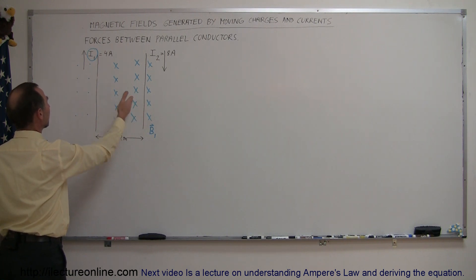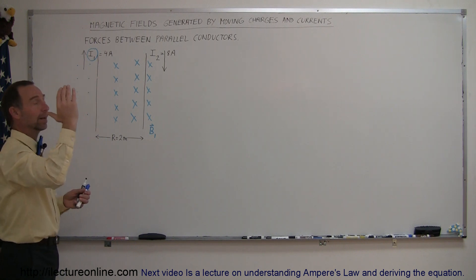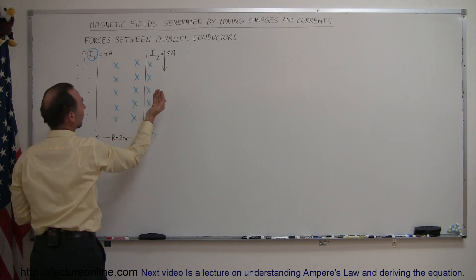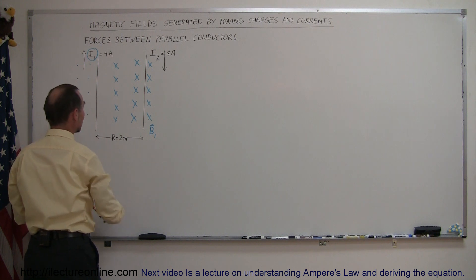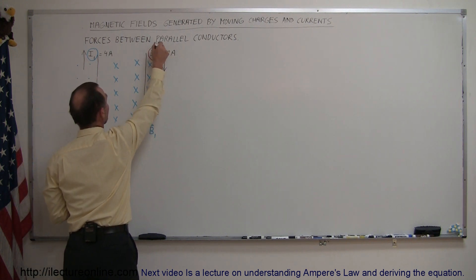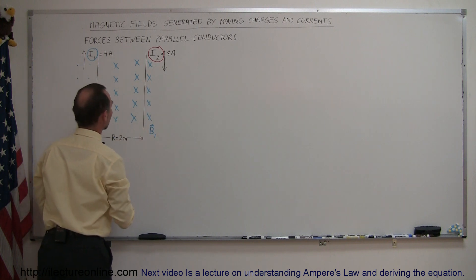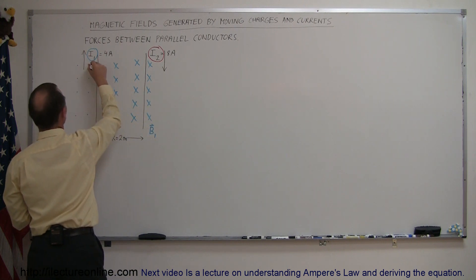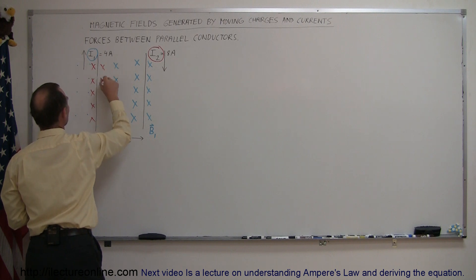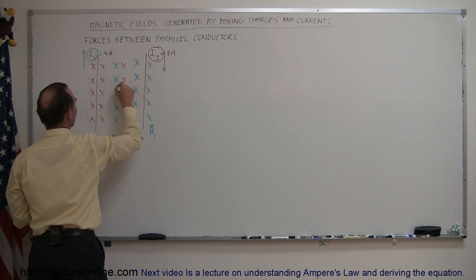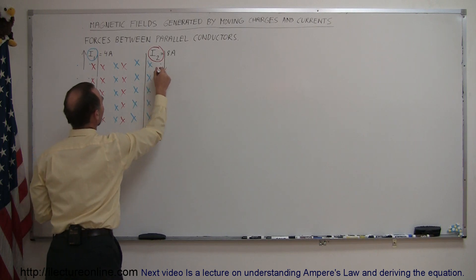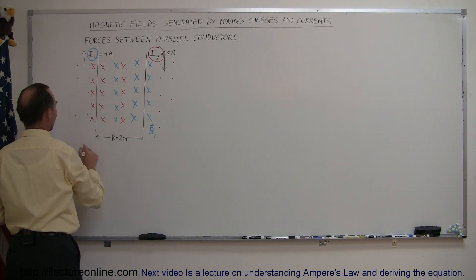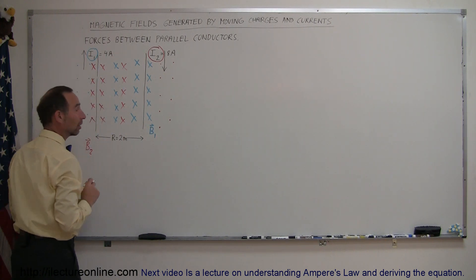Conductor number 2 is going to have a magnetic field as well. Using the right-hand rule with the current going downward, the field comes out of the board on the right side and into the board on the left side. Using a red pen to indicate B2: to the left of conductor 2, the B field goes into the board, and on the right side it comes out of the board. So where conductor number 1 is, we have B field caused by conductor 2, and we'll call that B sub 2.